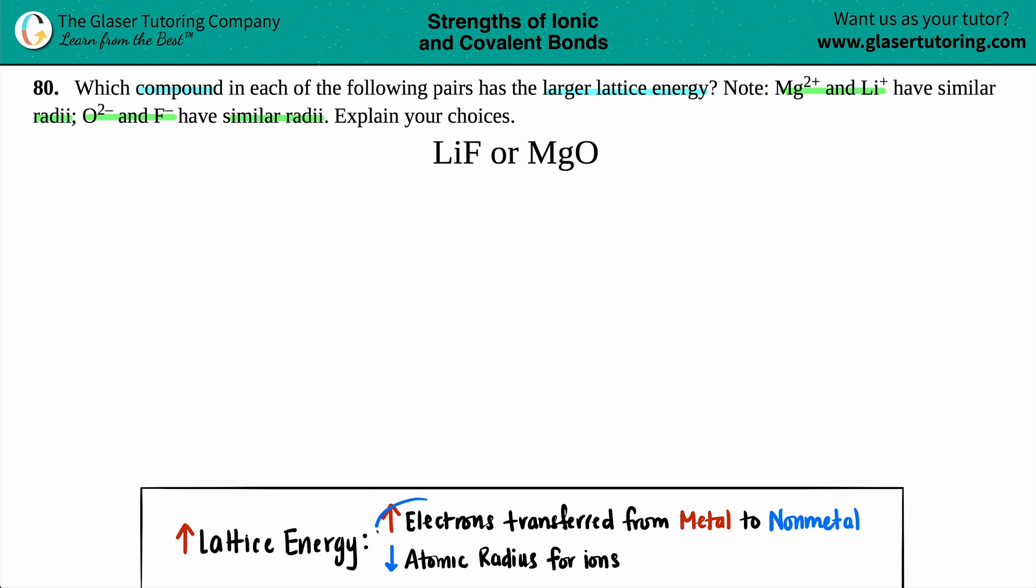And also, the lattice energy increases as the amount of electrons that are transferred from the metal to the non-metal in the ionic bond increases. So if you have one electron being transferred versus two electrons, the compound with two electrons will have a greater lattice energy.